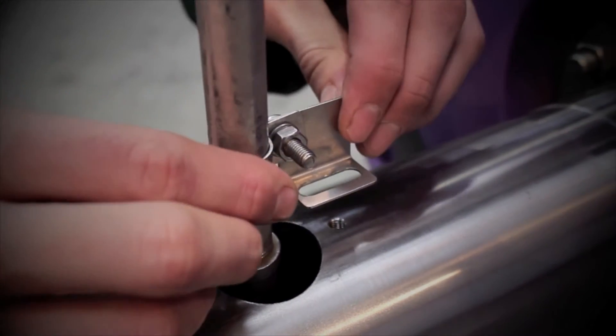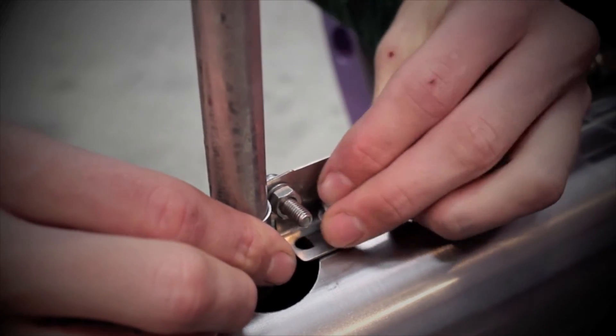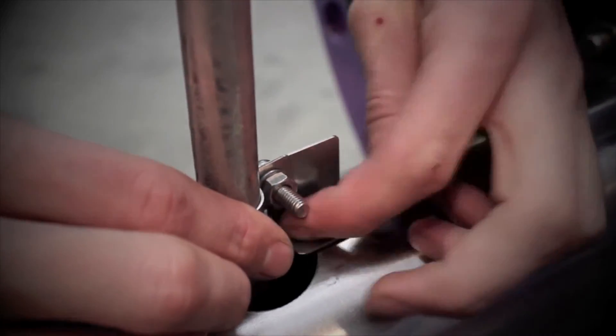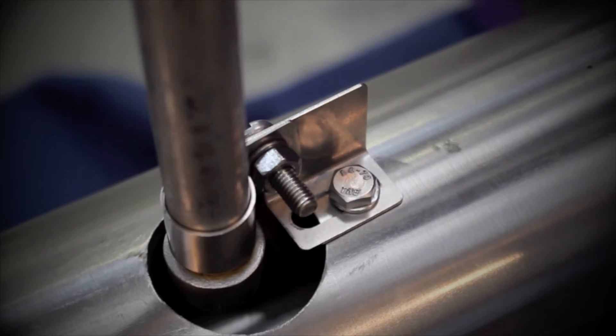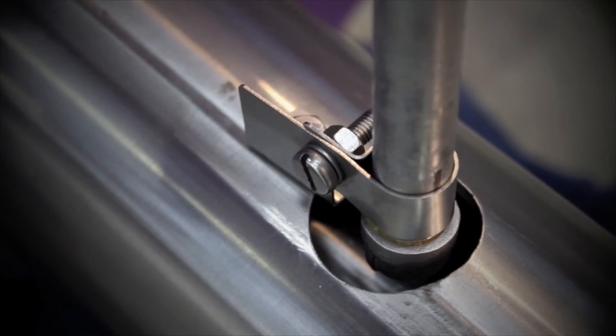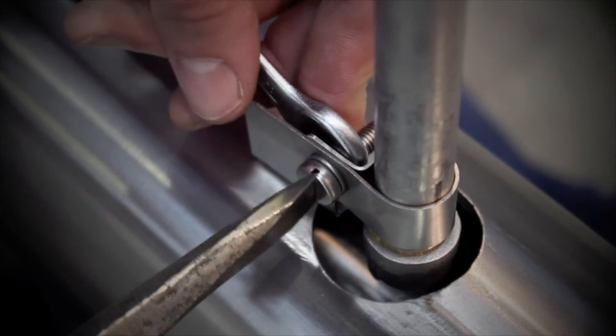Slide the retaining bracket down the feed pipe to mate with the column. Now fit the hex screw and washer and tighten using a spanner. Finally, secure the clamp by tightening the pan head screw.